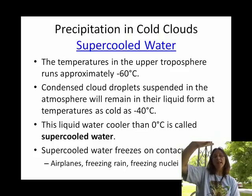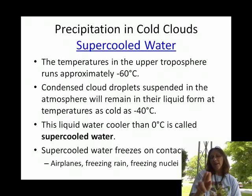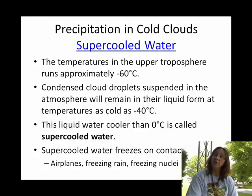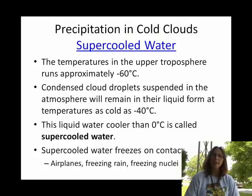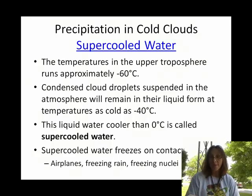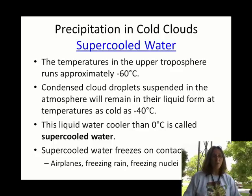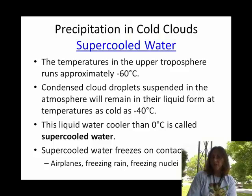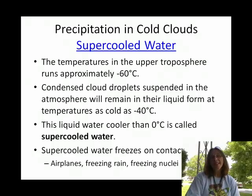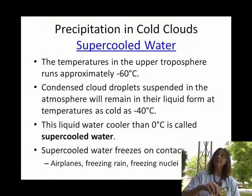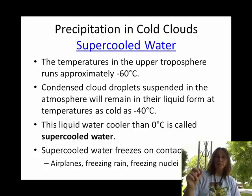In order for snow to form up in those clouds, we need something called super cooled water. Anything in physical science that is 'super' means it is a little unusual. Super cooled water is liquid water that is cooler than its freezing point temperature. We know that at normal atmospheric pressure, water will freeze at 32°F or 0°C. So up in those clouds, we definitely have liquid water that remains a liquid at temperatures cooler than its freezing point.